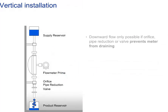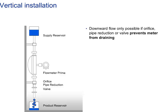Downward flow is possible with the introduction of an orifice pipe reduction or a valve preventing the meter from draining during normal running. Back pressure of 0.2 bar, which equals hydrostatic water pressure of 2 times the mass, must be assured to guarantee correct measurement.